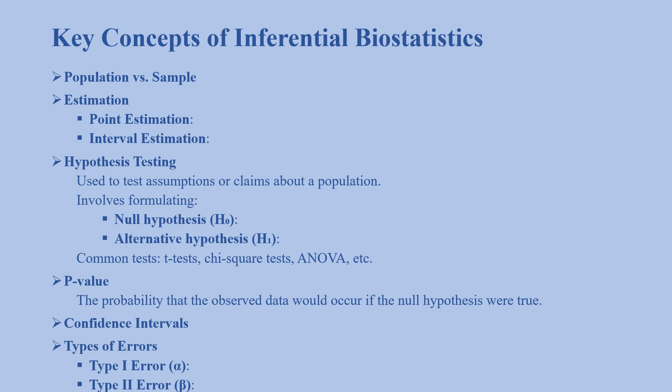Common tests include t-test, chi-square test, and ANOVA. The next concept is p-value: the probability that the observed data would occur if the null hypothesis were true. A small p-value (less than 0.05) suggests rejecting the null hypothesis.